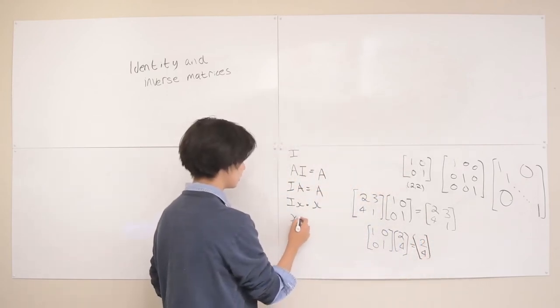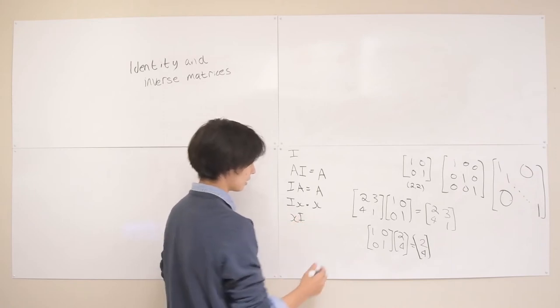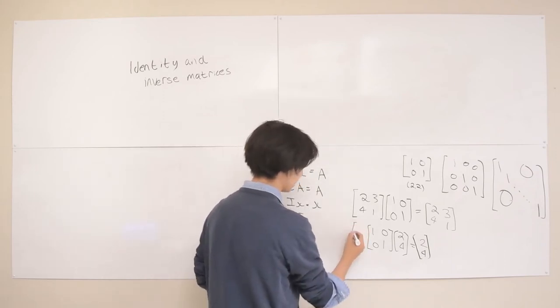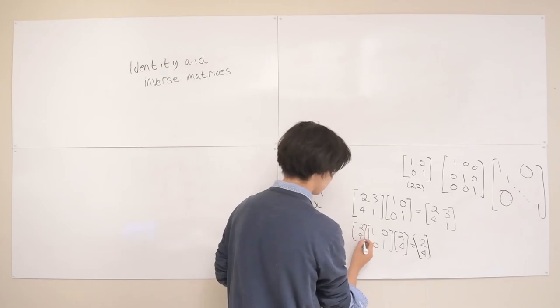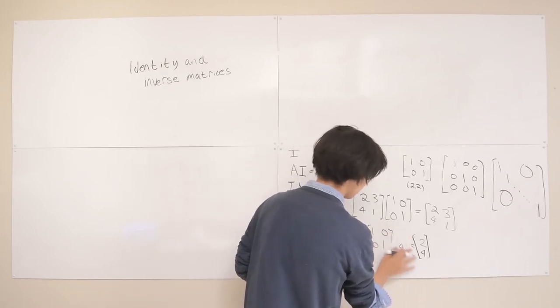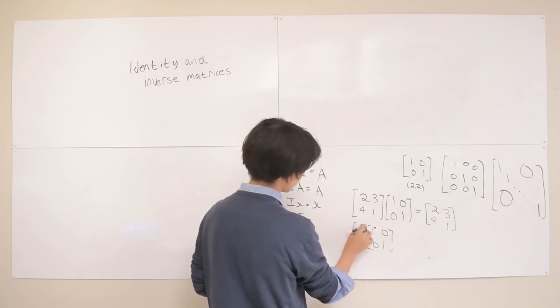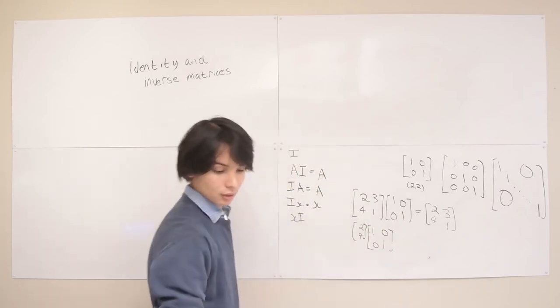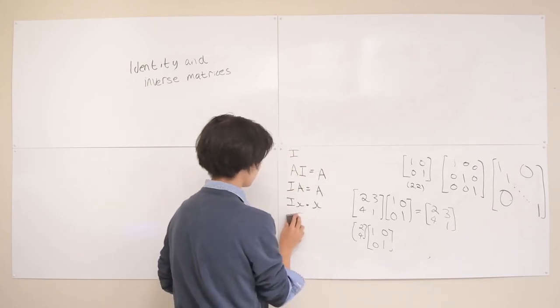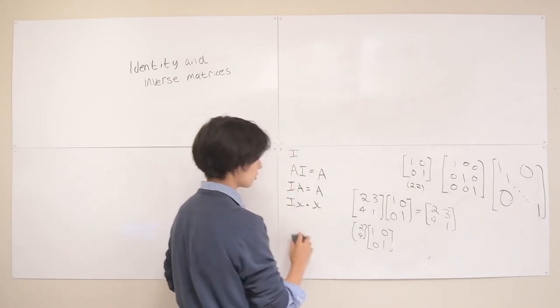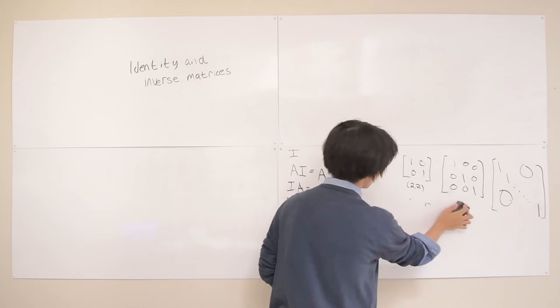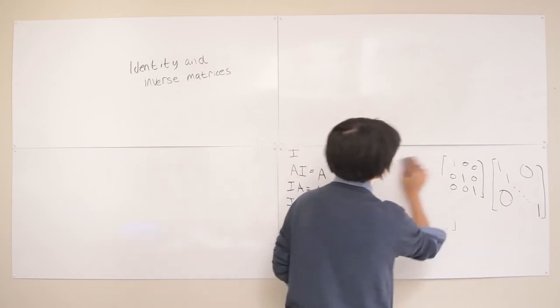And just one more thing, that this doesn't work, because as you'll notice, if we have that here instead, then these dimensions wouldn't work, because you'd have a row and then you wouldn't be able to do it. So this is not true, but this is true, this is true, and this is true. Okay, so now that we got that down, now we can talk about inverse matrices.